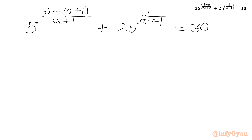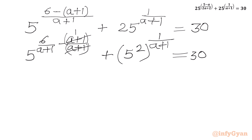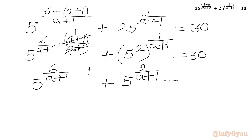Now I will split the exponent. I will write 5 to the power 6 over (a plus 1) minus (a plus 1) over (a plus 1). Then we have 25, which we can write as 5 squared, whole to the power 1 over (a plus 1), equal to 30. The (a plus 1) over (a plus 1) cancels to give 1, so we get 5 to the power 6 over (a plus 1) minus 1, plus 5 to the power 2 over (a plus 1), equal to 30.